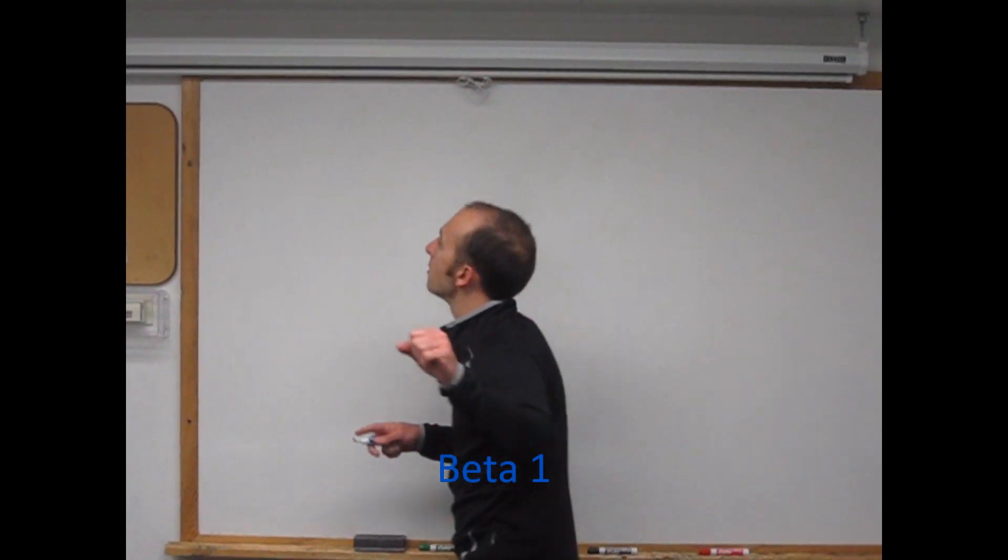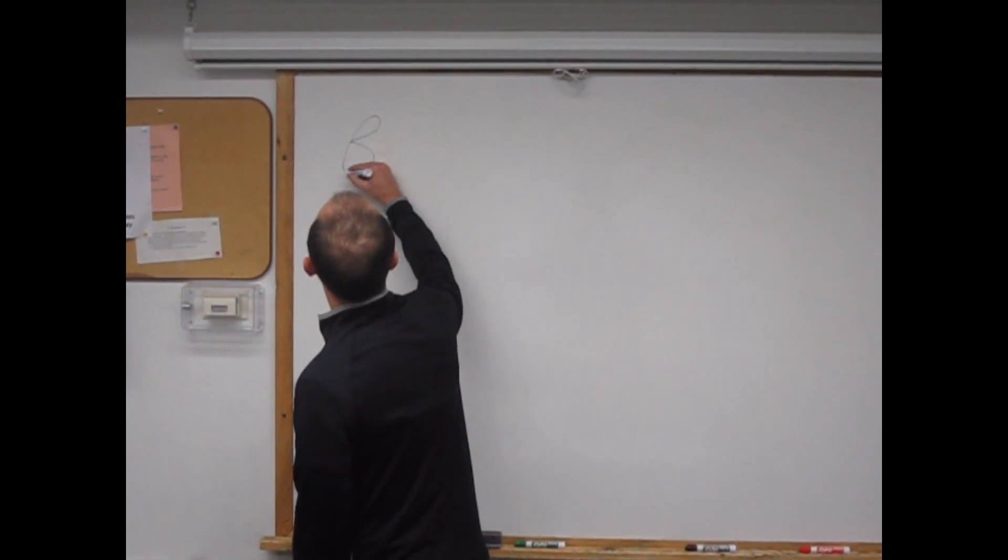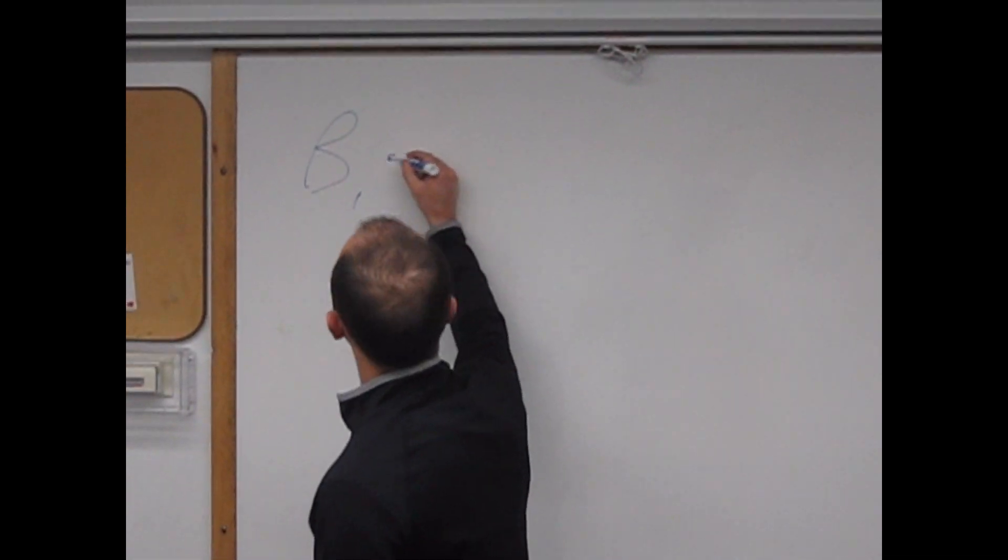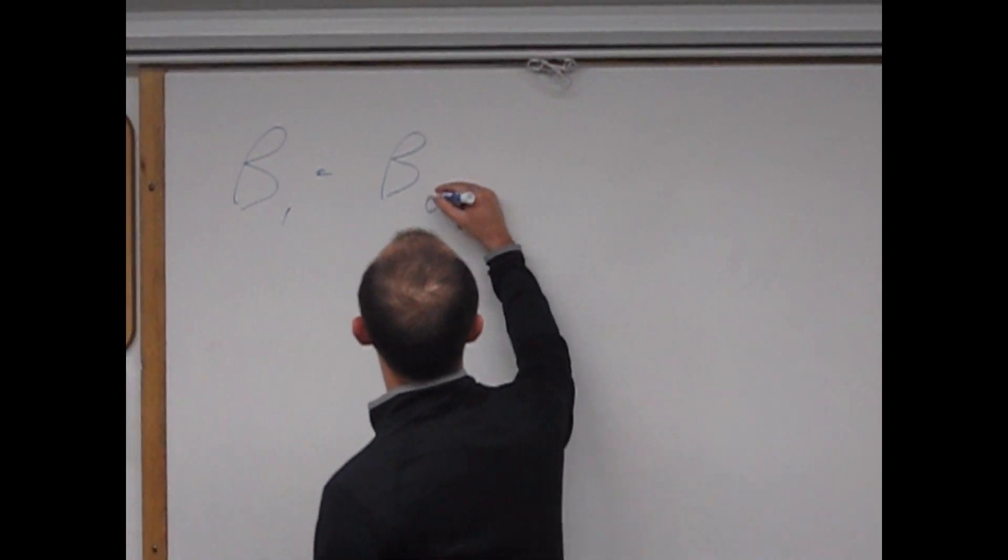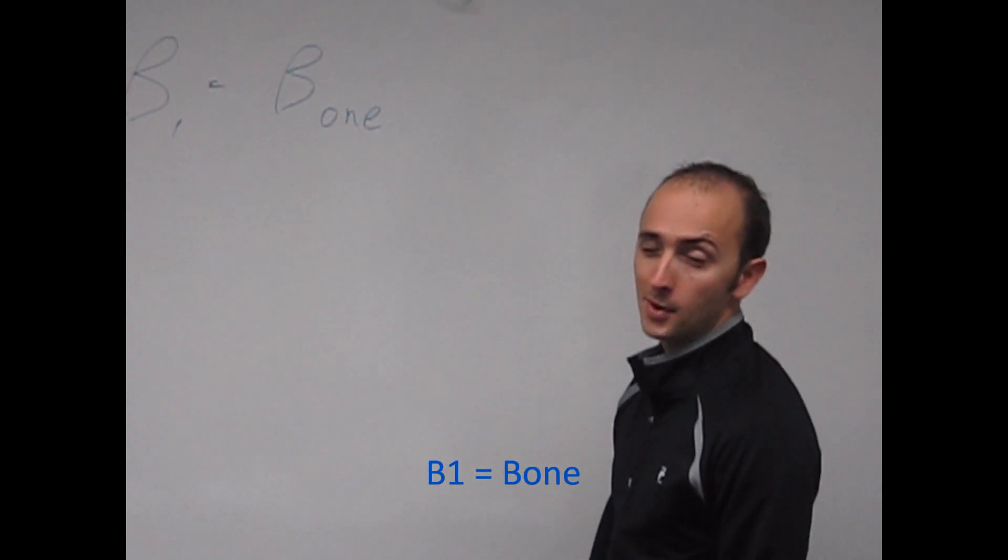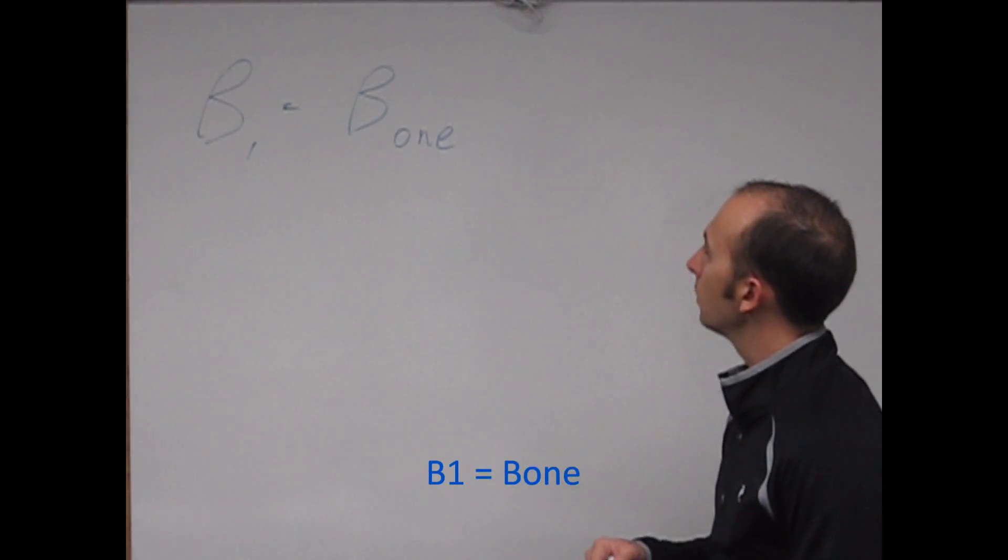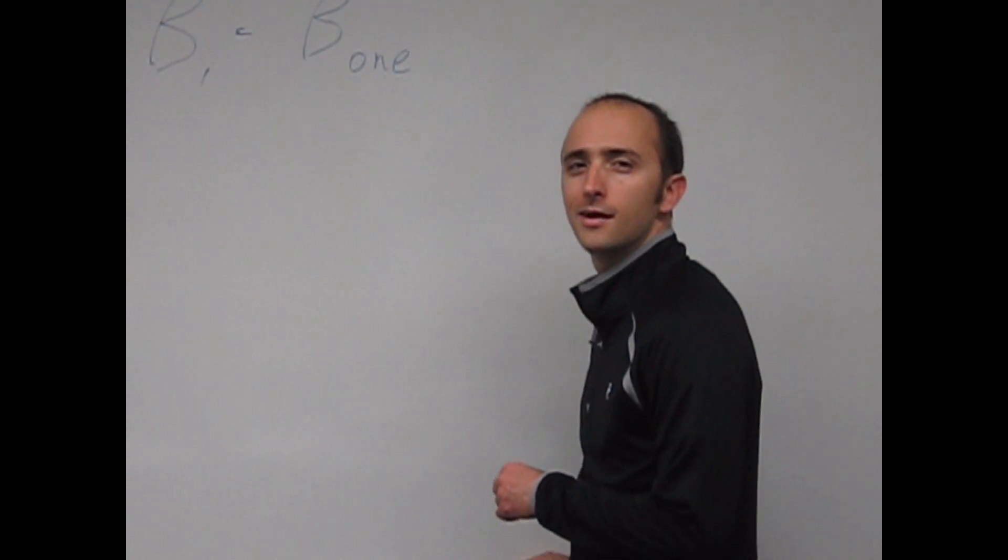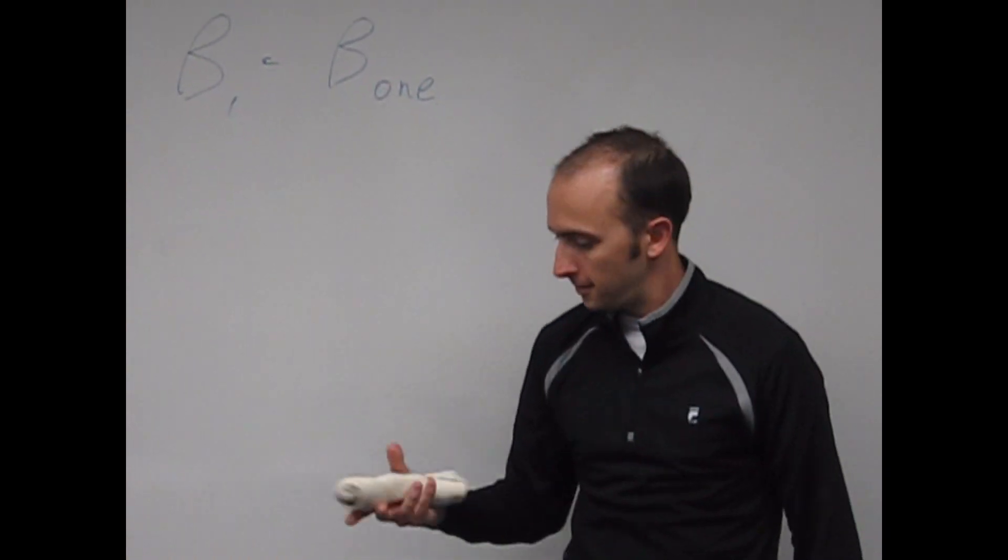Beta-1, well known as that, but I like to write it as beta-1, which looks a whole lot like a bone. Now where can I get a bone? Ah, very good.